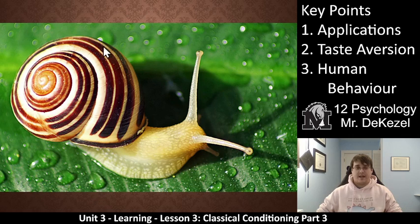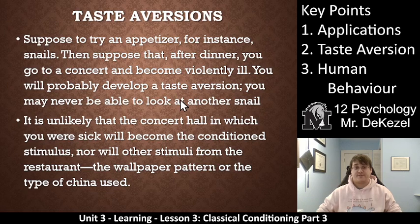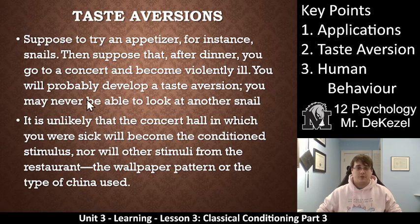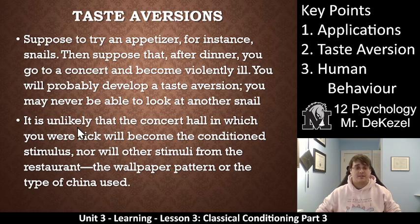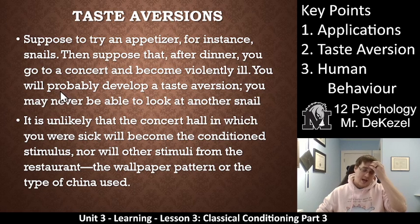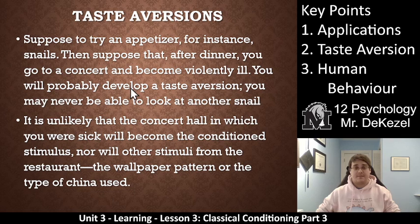We are going to talk about taste aversion. Suppose you try an appetizer — for instance, you try snails at a fancy restaurant. After dinner, you go to a concert and become violently ill in the bathroom. You'll probably develop a taste aversion and may never be able to look at another snail. It is unlikely that the concert hall where you were sick will become the conditioned stimulus, nor will other stimuli from the restaurant like the wallpaper or the china used. This will be true even if it wasn't the snail that made you sick. Humans have a biological predisposition that, once they've eaten something and gotten sick, they develop an aversion to it — something we've evolved with to help us avoid things that might make us sick.